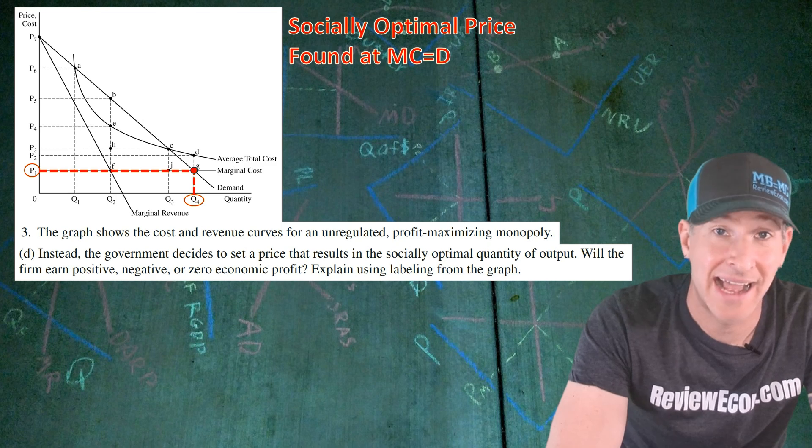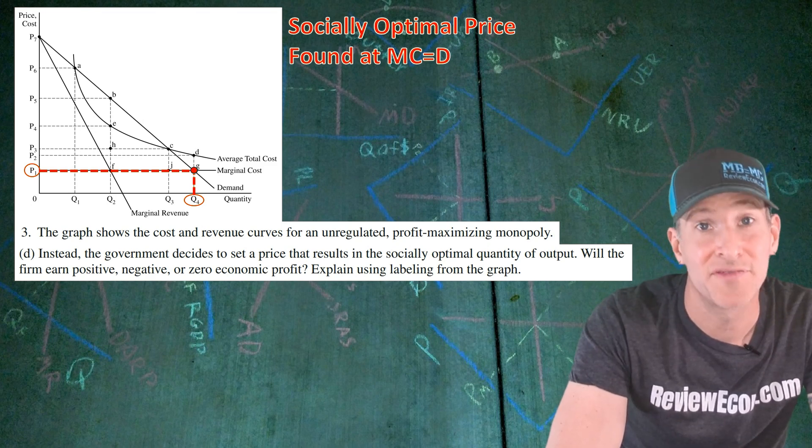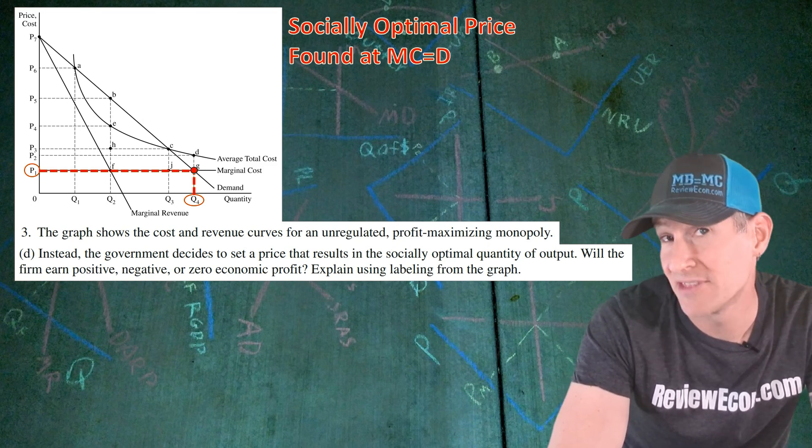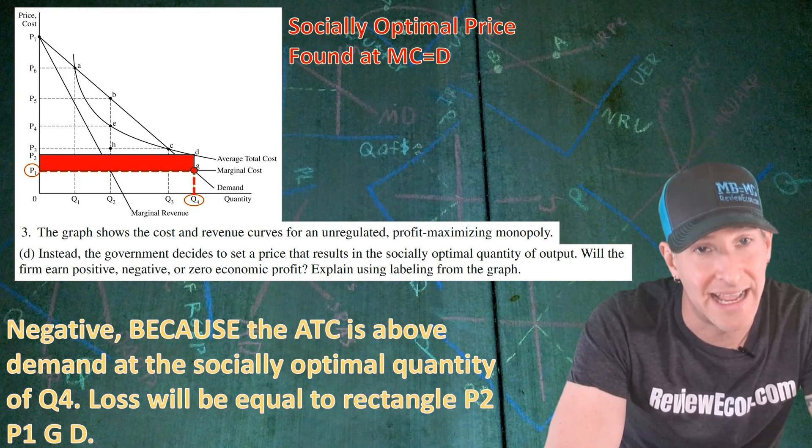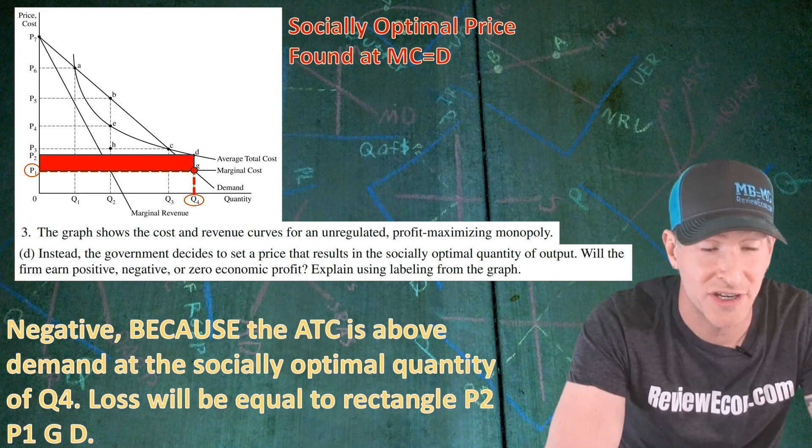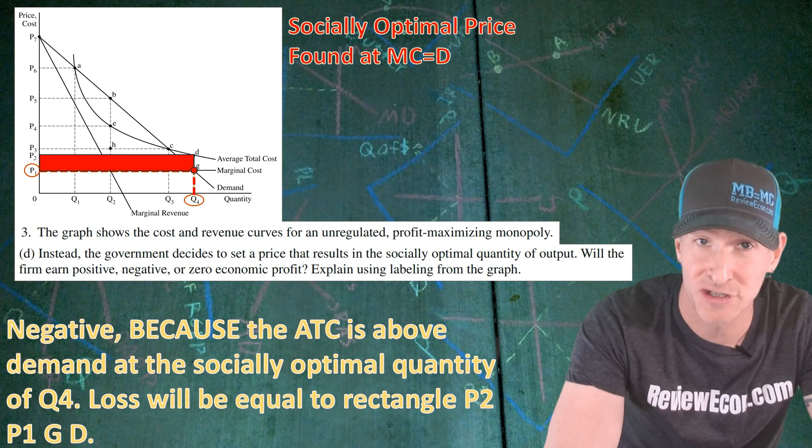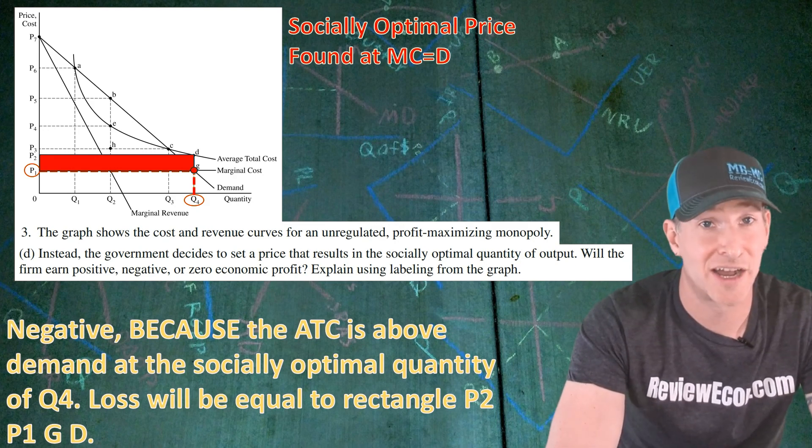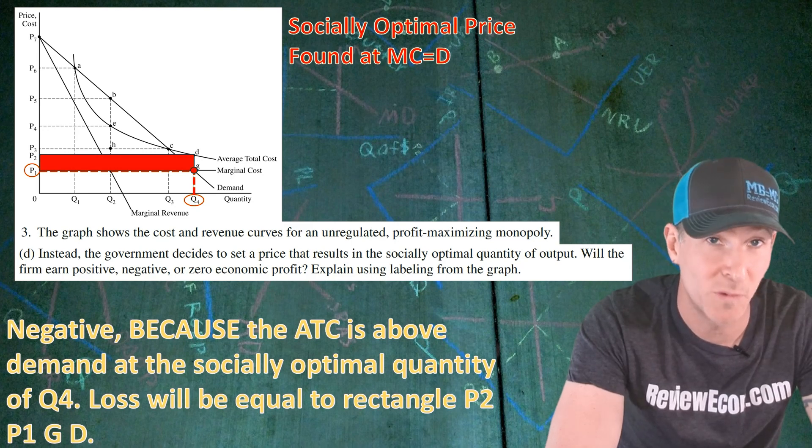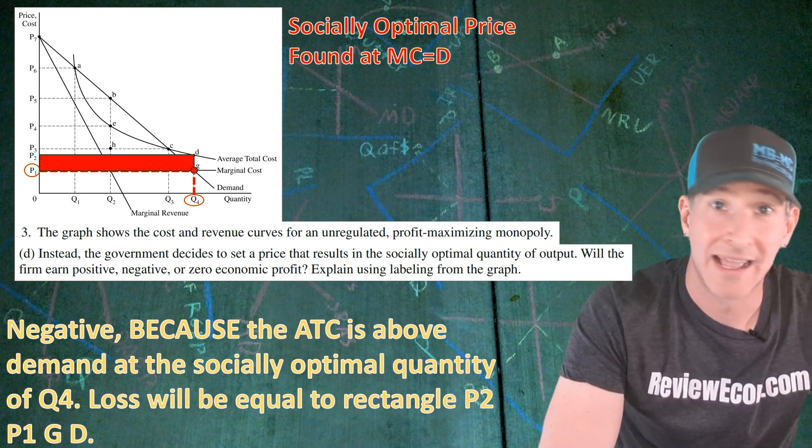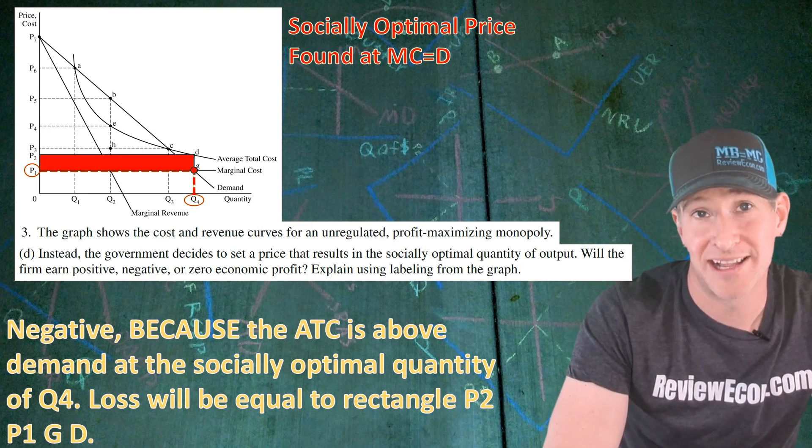But as you can see at Q4, the average total cost curve is above the price. That means we have this rectangle of economic loss. That leads us to our answer here: negative, because the average total cost curve is above the demand at the socially optimal quantity of Q4, and that means the economic loss will be equal to the rectangle found at P2, P1, G, D. If you've answered something like that, you get your last point.